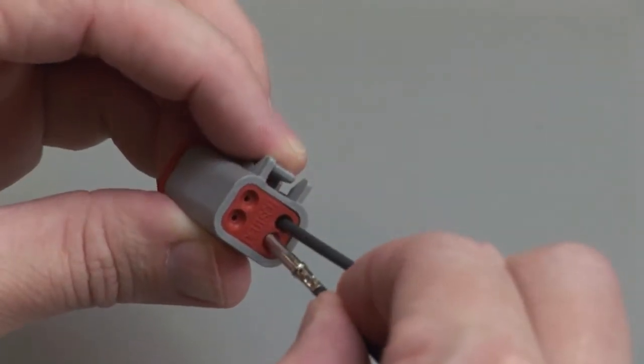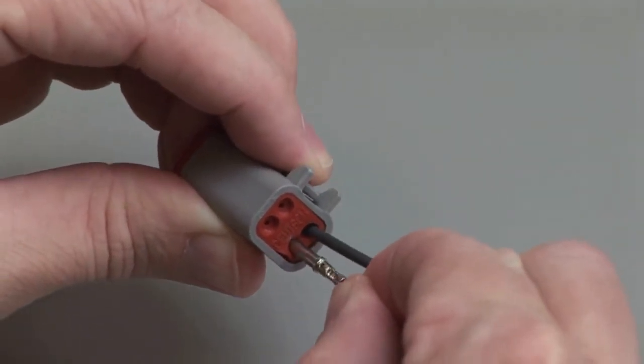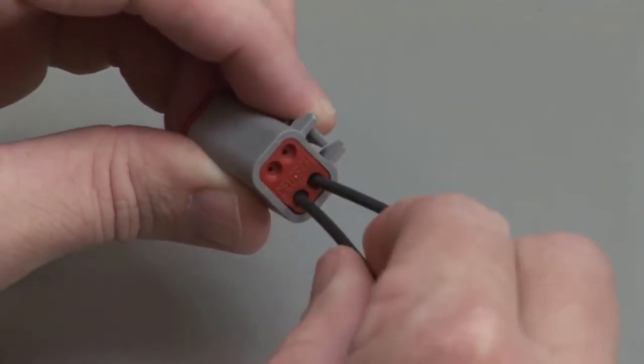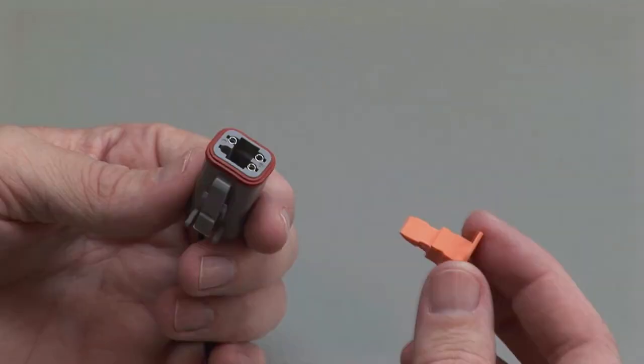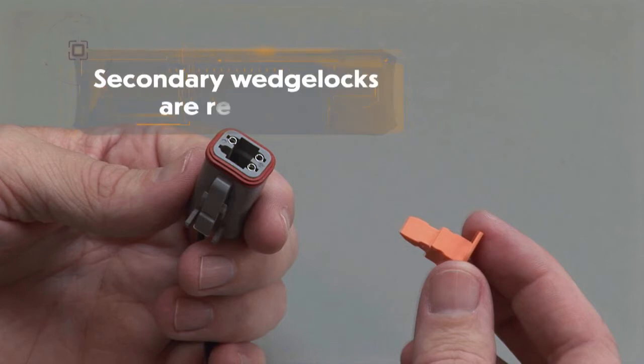Repeat this process until all of the cavities are filled. When populating a DT series connector, secondary wedge locks are required. Wedge locks ensure proper alignment of the contacts.